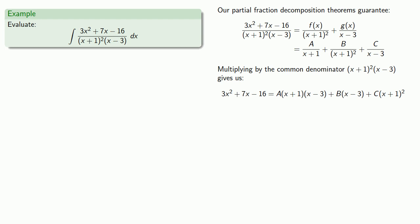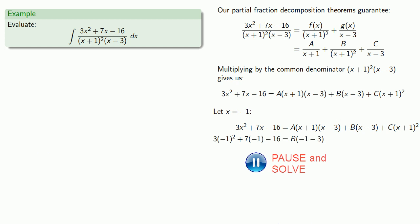And so, a convenient value of x to choose would be x = -1, which will make these two terms drop out, and leave us with only the term with the unknown B. So, we'll substitute and solve, giving us B = 5.